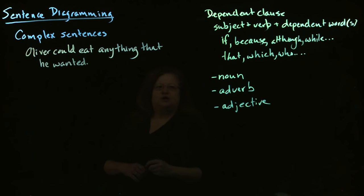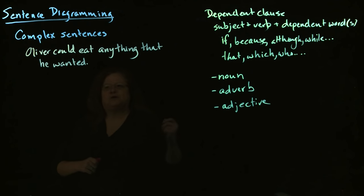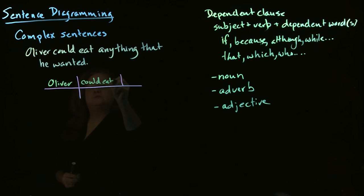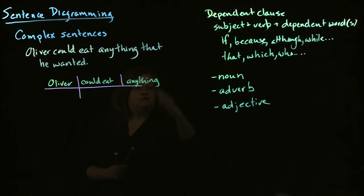So, we're looking here at a main sentence, and then we're looking here at a subordinate clause, that he wanted, that is our dependent word. So, we'll start by putting our main sentence up there. We have Oliver. Could eat. Anything.